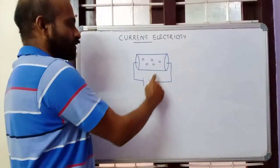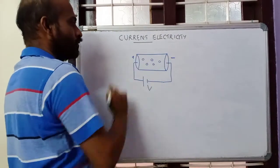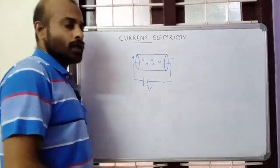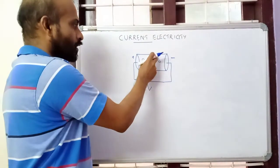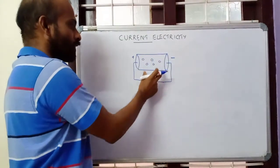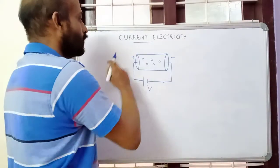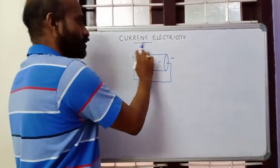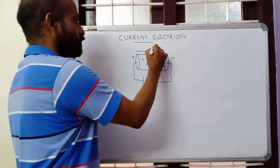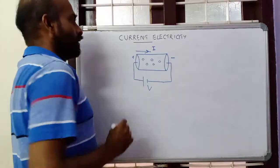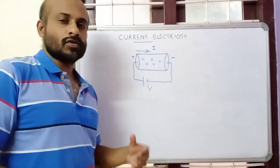What happens is the electrons will start to move from the negative terminal — this end is negative and this end will be positive — the electrons move from the negative terminal to the positive terminal. This is the direction of electrons when we apply a potential difference across the ends of a conductor. But conventionally, the direction of current is from positive to negative.